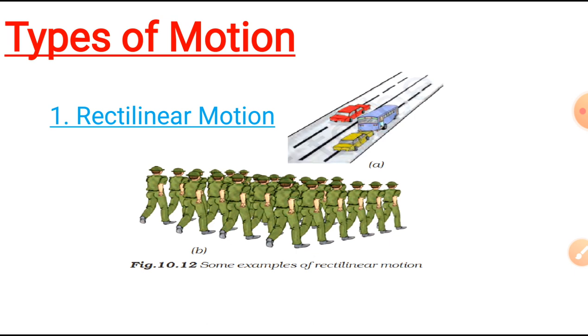First of all, here you can see rectilinear motion. Now, you may have observed the motion of a vehicle on a straight road, march past of soldiers in a parade or falling of a stone. Look, in these all examples along with a 100 meter race in which athletes are just running in a straight track, what's common?